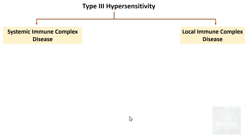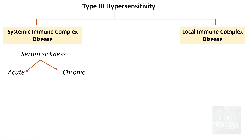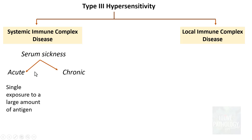Although type 3 hypersensitivity is typically systemic, it can also be a local immune complex disease. Type 3 reactions are broadly categorized into systemic immune complex disease and local immune complex disease. Systemic immune complex disease — the prototype is serum sickness — can be further categorized into acute or chronic. Acute serum sickness occurs with exposure to a very large amount of antigen, while chronic serum sickness involves repeated or prolonged antigen exposure.